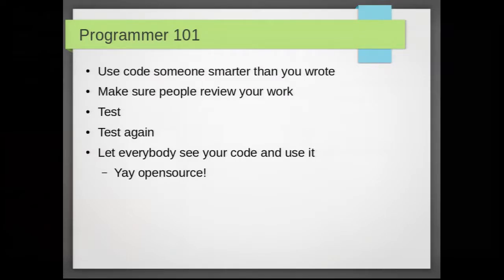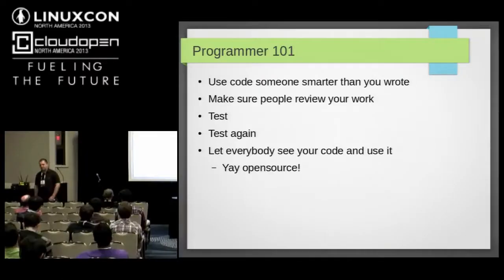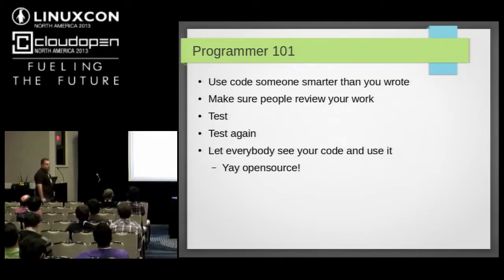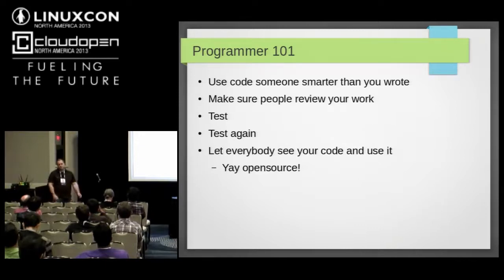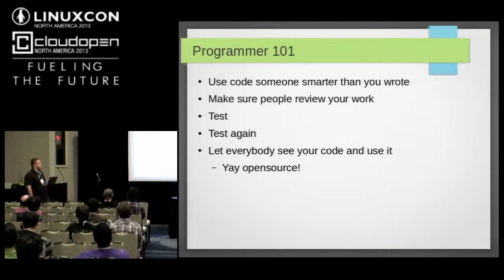How do you write good code? First of all, you start by looking if someone else already did something like that, and if they did, you just take their code. Next, you get people to look at your code, because given enough eyeballs, bugs are shallow. If enough people see your code, any problem will be obvious and it will be fixed.